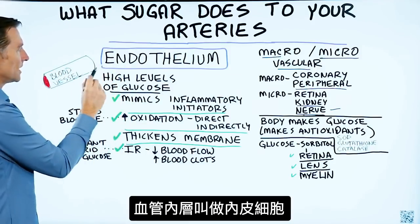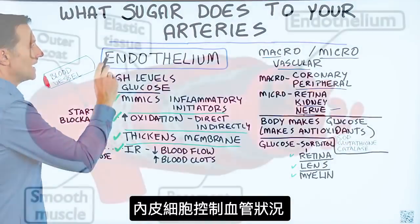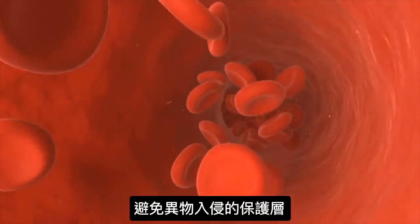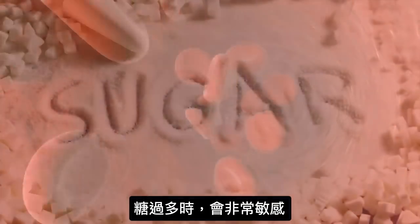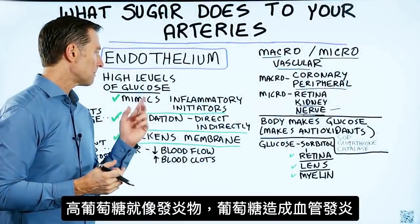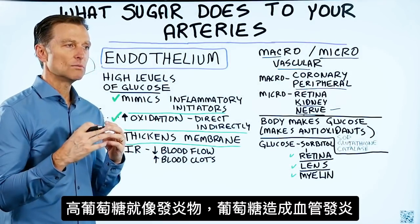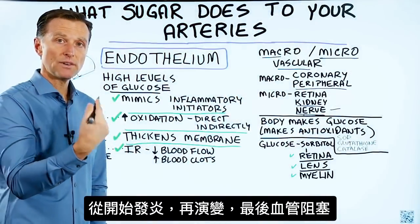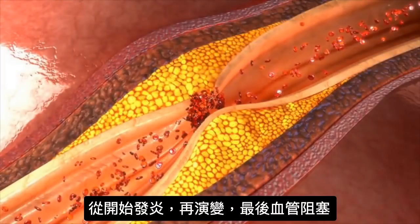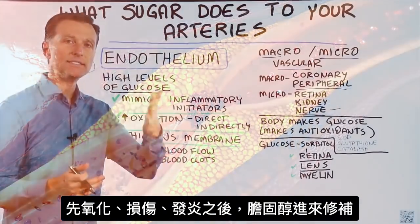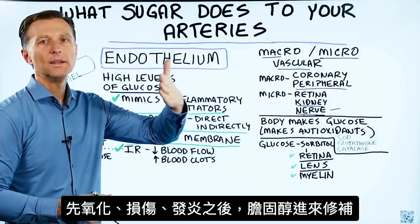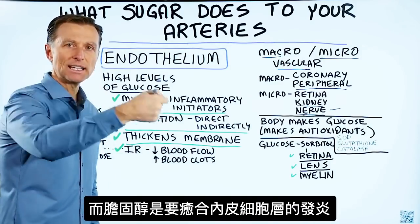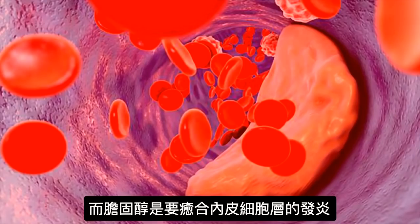The layer on the inside of the blood vessel is called the endothelium. It controls the tone of blood vessels and acts as a barrier, preventing certain things from invading. It's highly sensitive to excess sugar. High levels of glucose mimic inflammatory initiators, creating inflammation in the arteries. This is the very beginning of a sequence of events that ends in a blockage. It starts with oxidation, then damage, then inflammation. Cholesterol comes in after the fact — people focus on cholesterol, but it's really just trying to heal this inflamed, damaged endothelial layer.